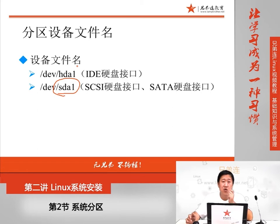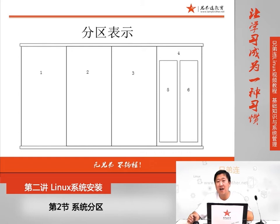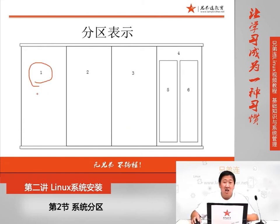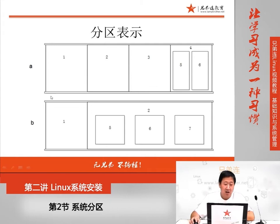硬盘分区的设备文件名也是系统自动检测的，我们要做的事情是看到它，知道它代表哪一个硬盘、哪一个分区就足够了。用我们的柜子来看看分区：第一个柜子就是sda1，第二个就是sda2，第三个就是sda3，第四个就是sda4，第五个就是sda5，第六个就是sda6。把这个柜子称作第一块硬盘也叫做sda，第一个分区就是sda1。